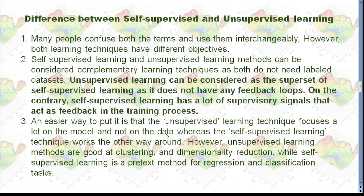It sounds like self-supervised learning and unsupervised learning are quite similar — so what's the difference? In short, unsupervised learning can be considered as the superset of self-supervised learning, as it does not have any feedback loops. On the contrary, self-supervised learning has a lot of supervisory signals that act as feedback in the training process.